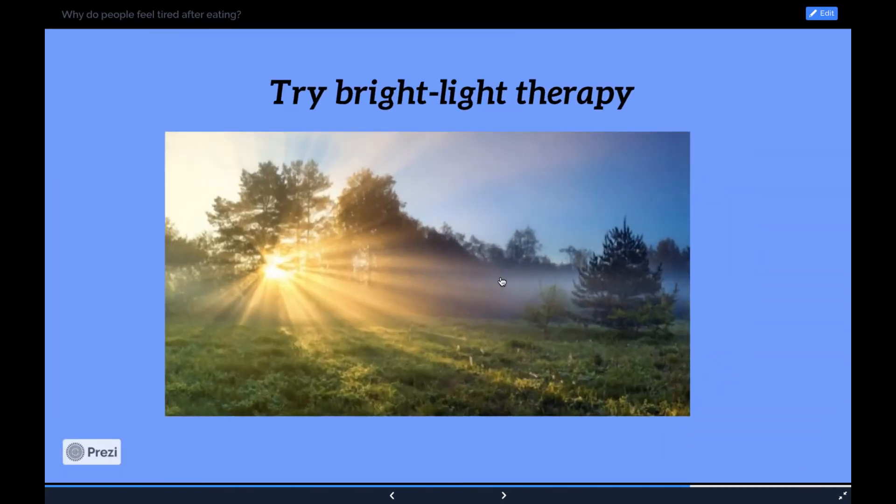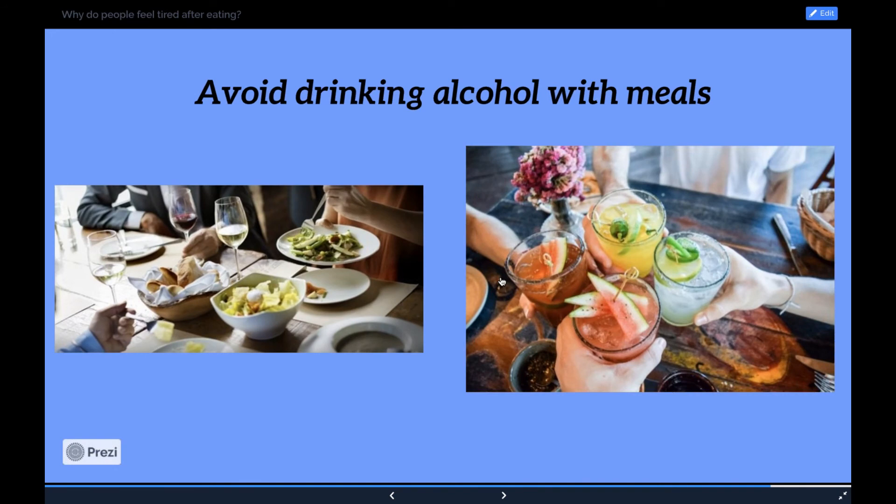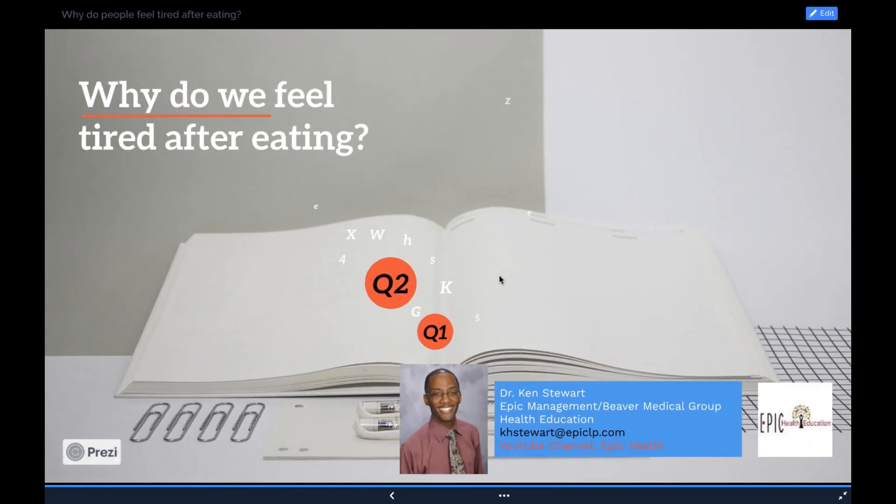Try bright light therapy. Authors of a 2015 study found that exposing people to bright light after lunch reduced tiredness. And, last but not least, avoid drinking alcohol with meals. Alcohol can make people feel more tired. So, to recap the five strategies to help prevent tiredness after a meal: get your rest, go for a walk, take a power nap, try bright light therapy, and avoid drinking alcohol with meals.